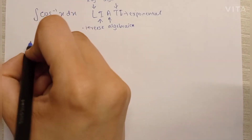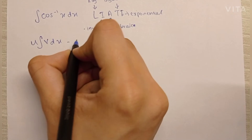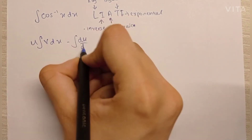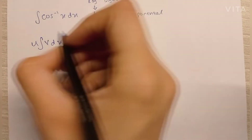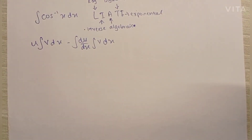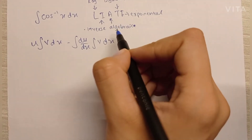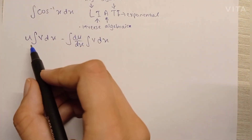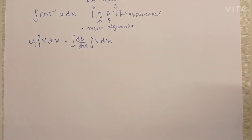The integration by parts formula is: u into the integration of v dx, minus the integration of the differentiation of u into the integration of v dx, where u and v are two different terms of the integral. The LIATE rule helps us decide which term to keep as u and which to set as v, based on which term is easier to integrate and which is easier to differentiate.